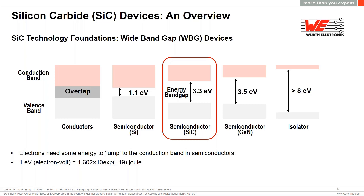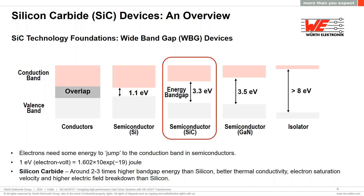The special properties of these materials help to build MOSFETs and diodes with better characteristics. Silicon carbide features better thermal conductivity, higher electron saturation velocity, and higher electric field breakdown than standard silicon — all contributing to the superior performance of these devices.